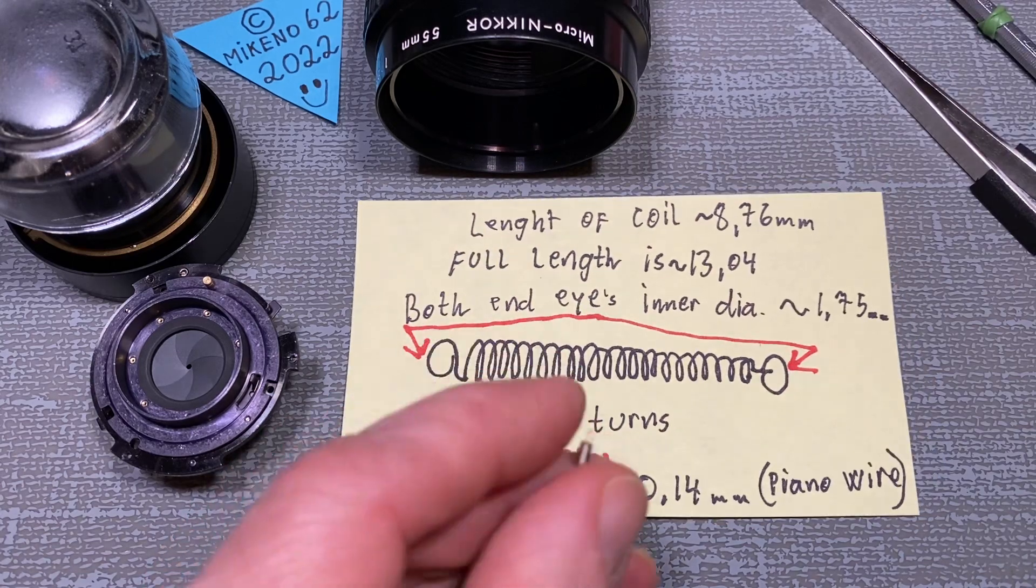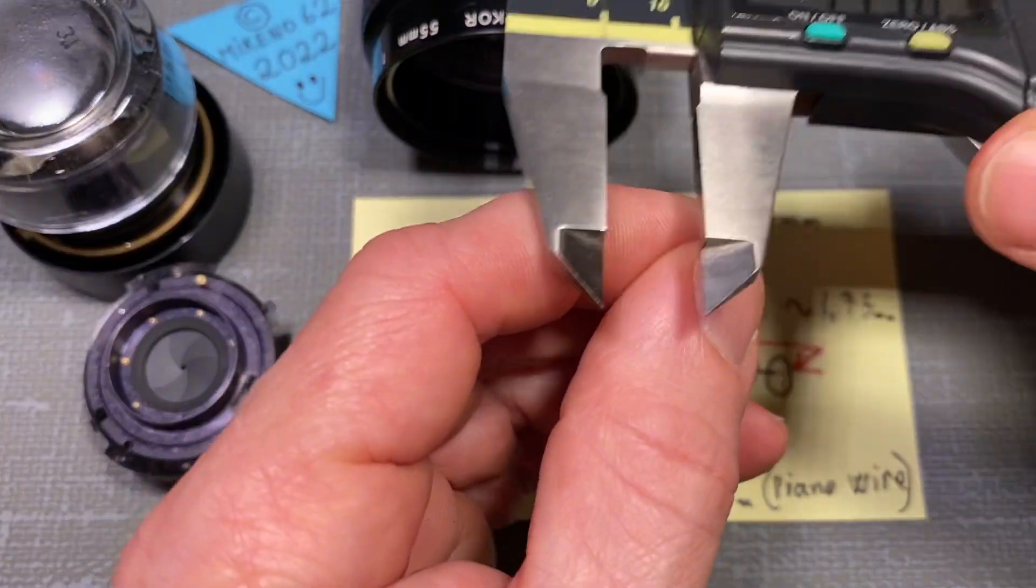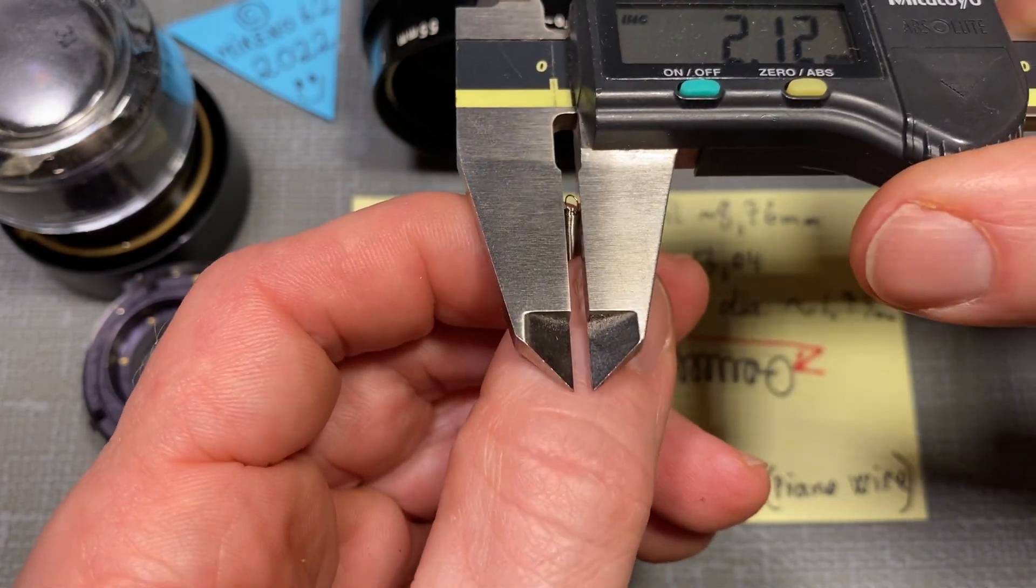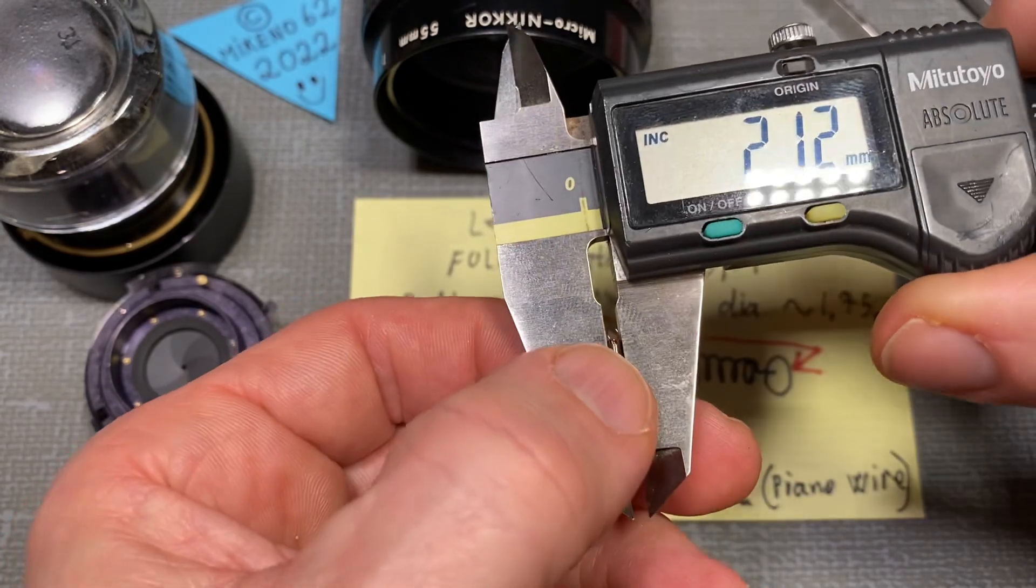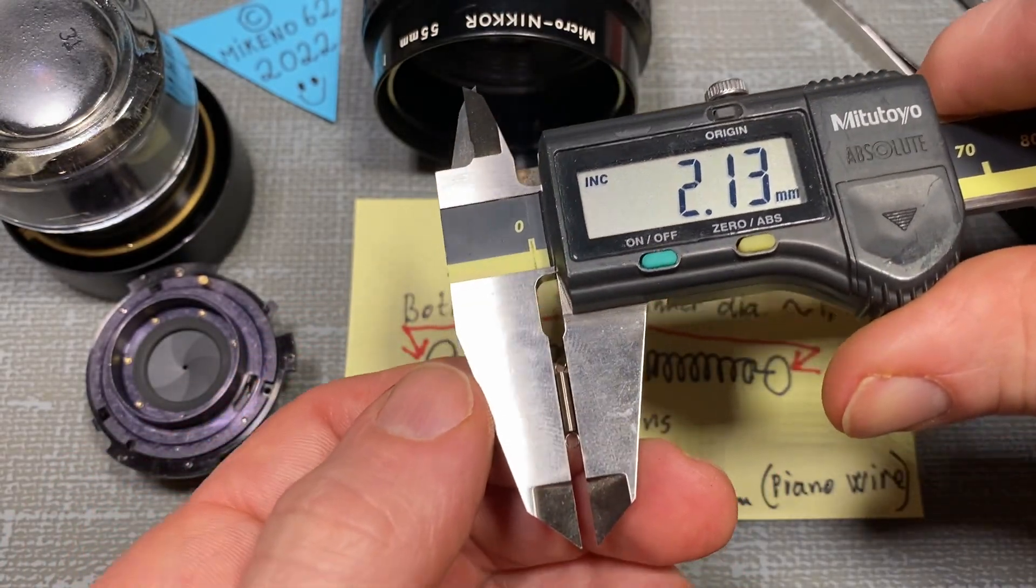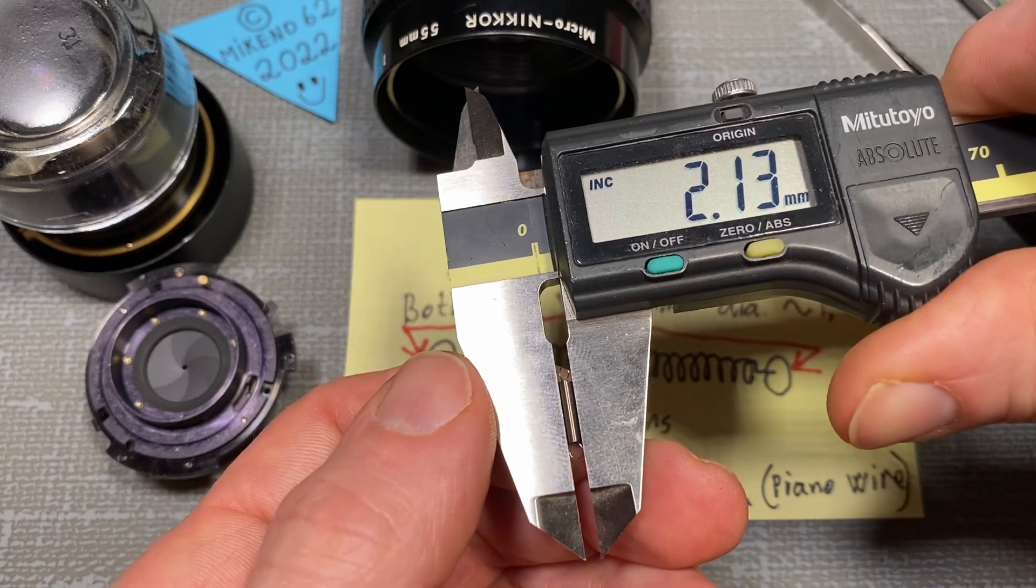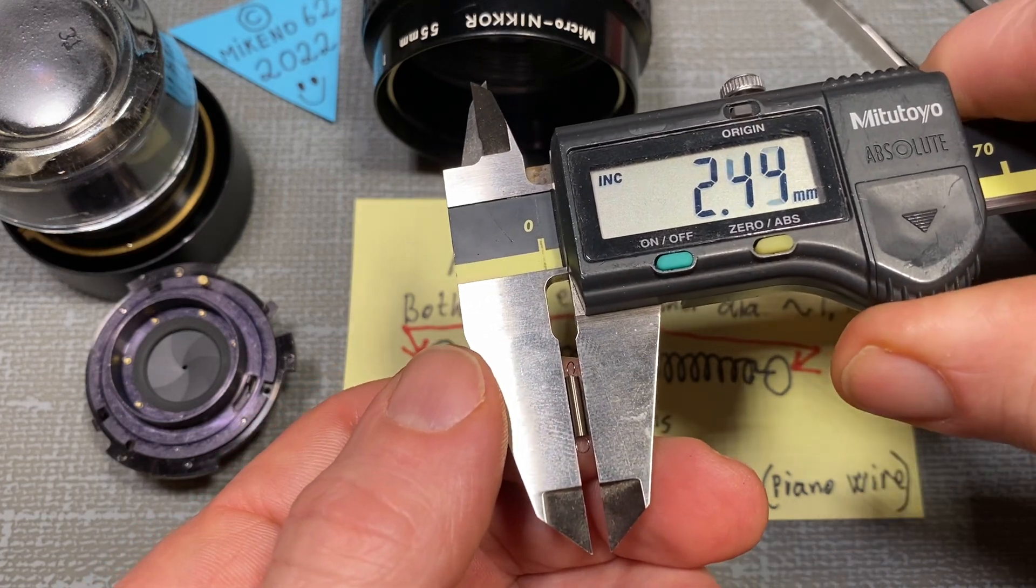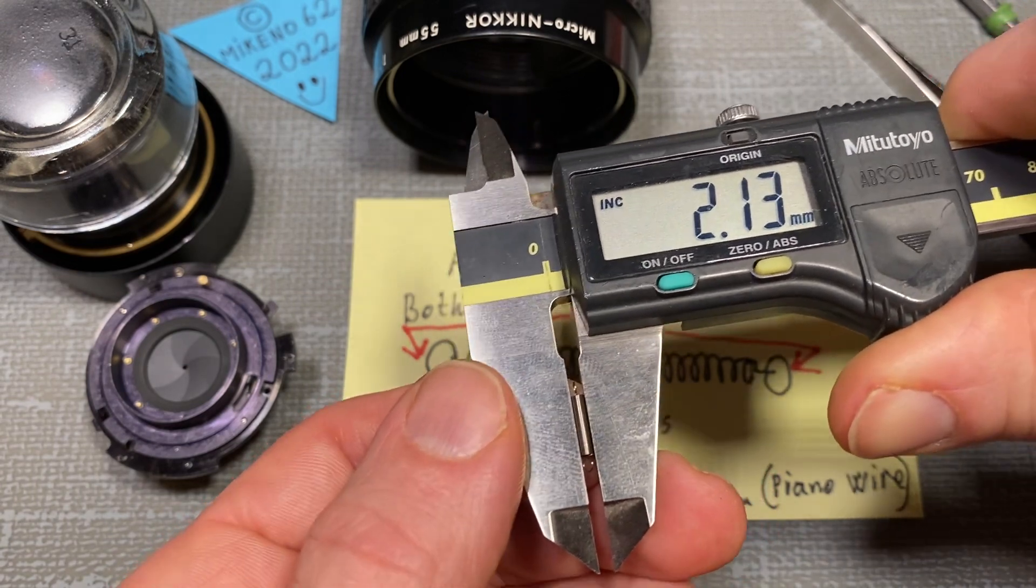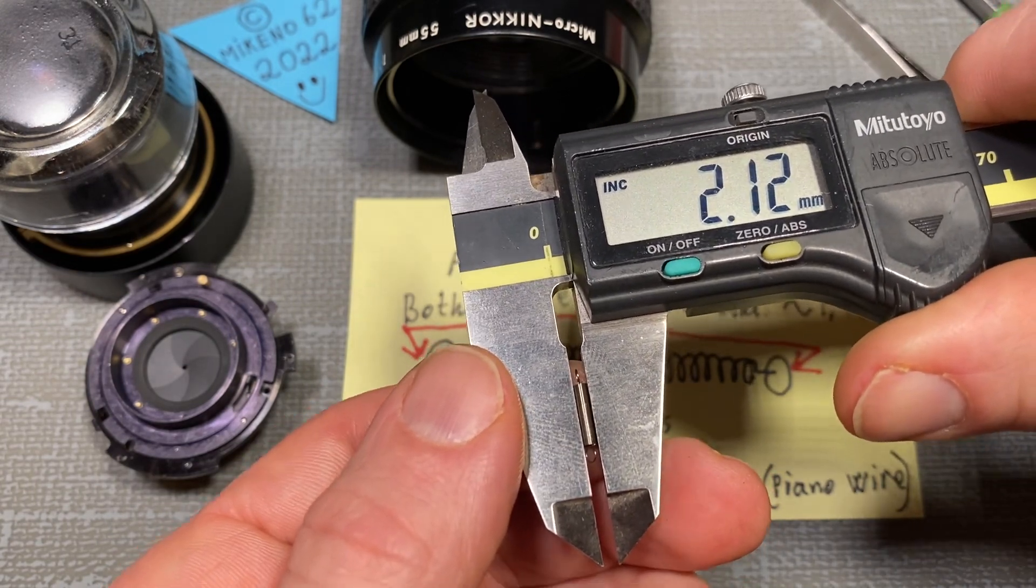What about the diameter of the actual spring itself? The outer diameter should be something like 2.13 or 2.12 millimeter.